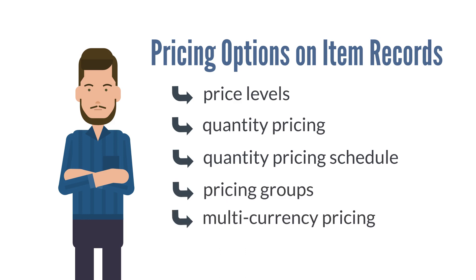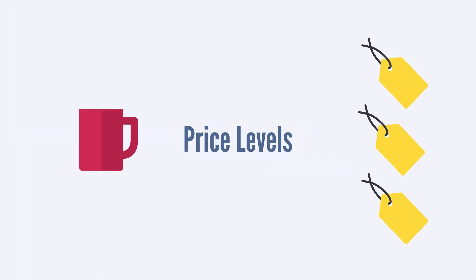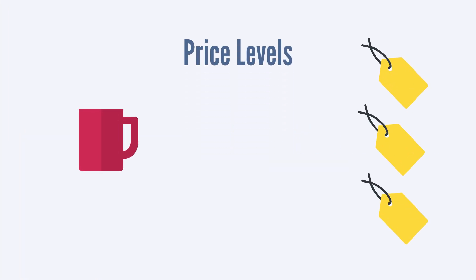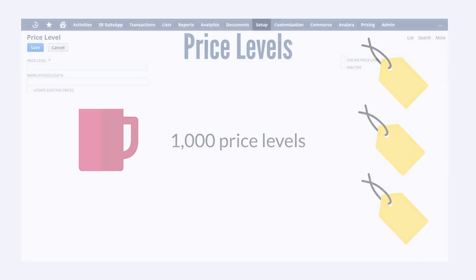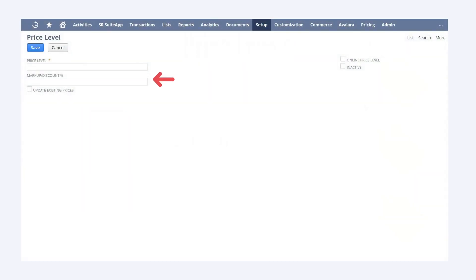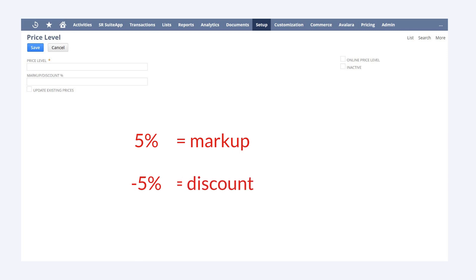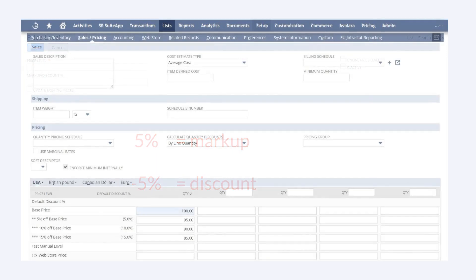To begin, we need to understand price levels. Price levels allow you to have different prices for the same item. NetSuite calls this feature multiple pricing. With multiple pricing, users can create up to 1,000 different price levels. When you create a new price level, you specify the markup or discount percentage for that level. A positive percentage will result in a price markup from the base price of an item, while a negative percentage will result in a price discount.